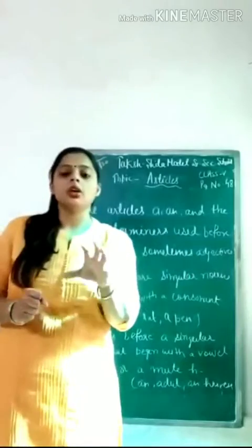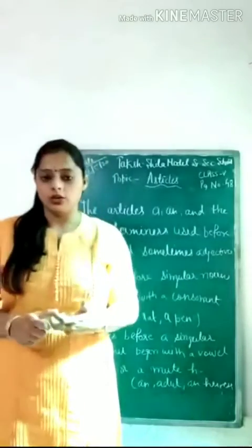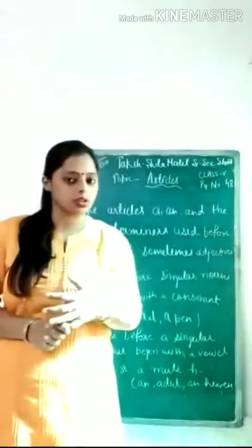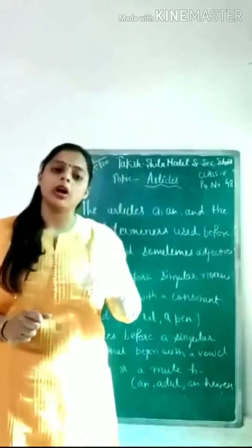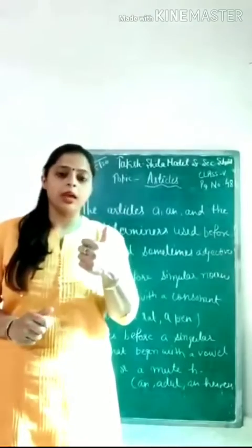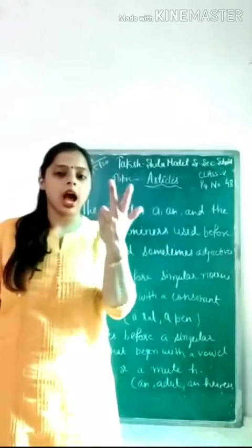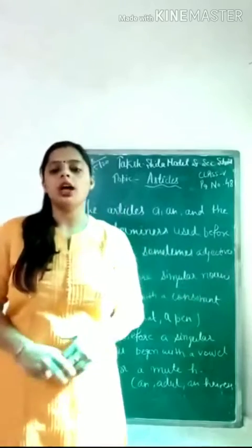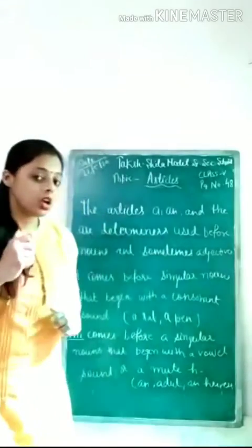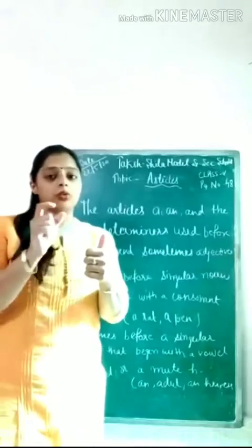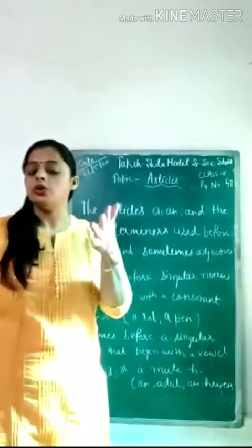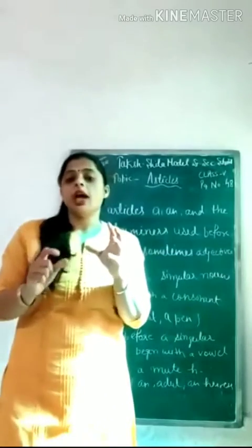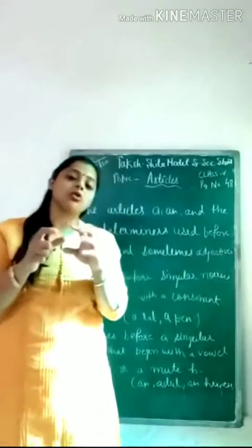And we use An with the vowel sound. You all know vowels and consonants. We have five vowels in our grammar: A, E, I, O, and U. We use An with these letters. But sometimes we also use An with the mute sound of H.